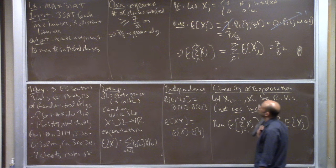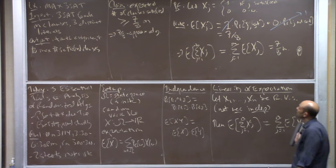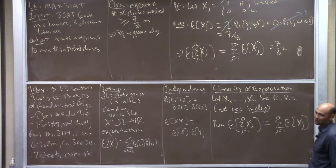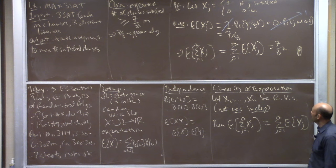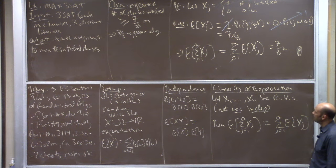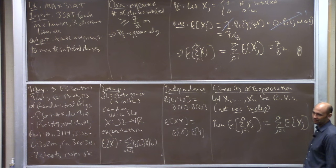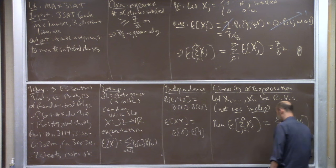A student asks why the claim was stated as greater-than-or-equal-to. The answer: it's actually exactly 7/8. The claim is still true, but from an approximation algorithm standpoint, the direction of interest is the lower bound. The student is correct that it's no better than 7/8.